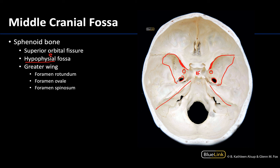Lateral and really small, you're going to have the foramen spinosum. The foramen spinosum is going to allow the middle meningeal artery to ascend or enter into the skull. The middle meningeal artery will be one of the dominant supplies for the meninges, so it has to get into the skull — and that is how it is entering.